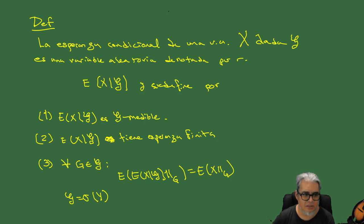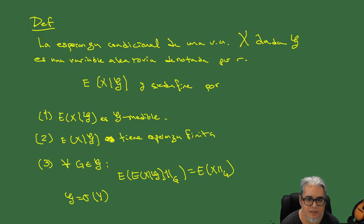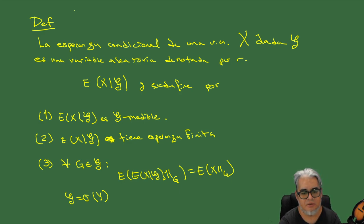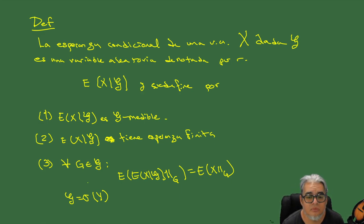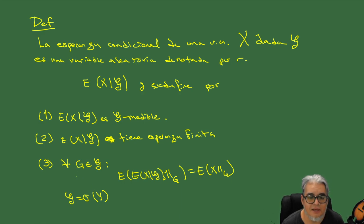Entonces, nos habíamos quedado aquí en la sesión anterior. Esta es la definición de esperanza condicional, donde esa G garigoleada es una sigma álgebra generada por una variable aleatoria Y, que no es la generalidad pero es el caso que nos va a interesar a nosotros.